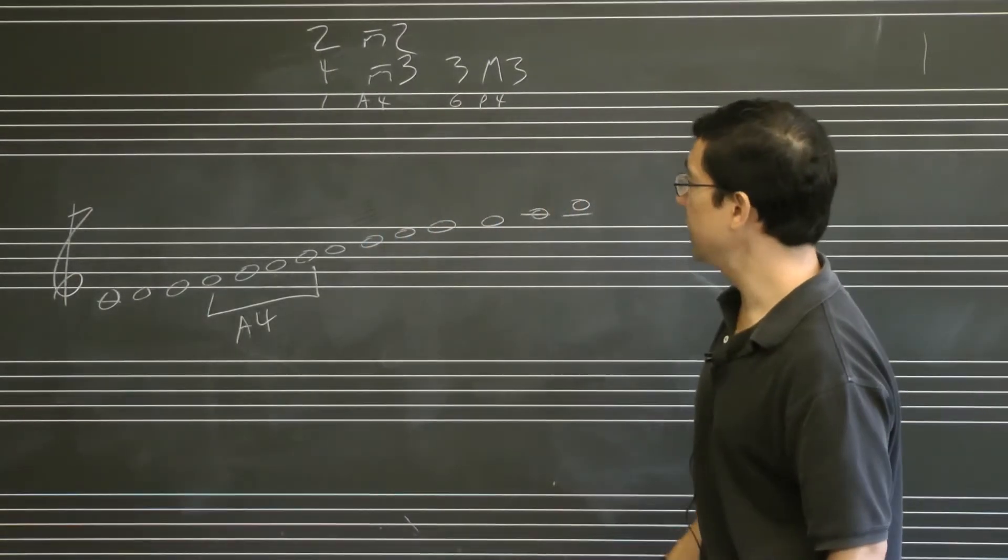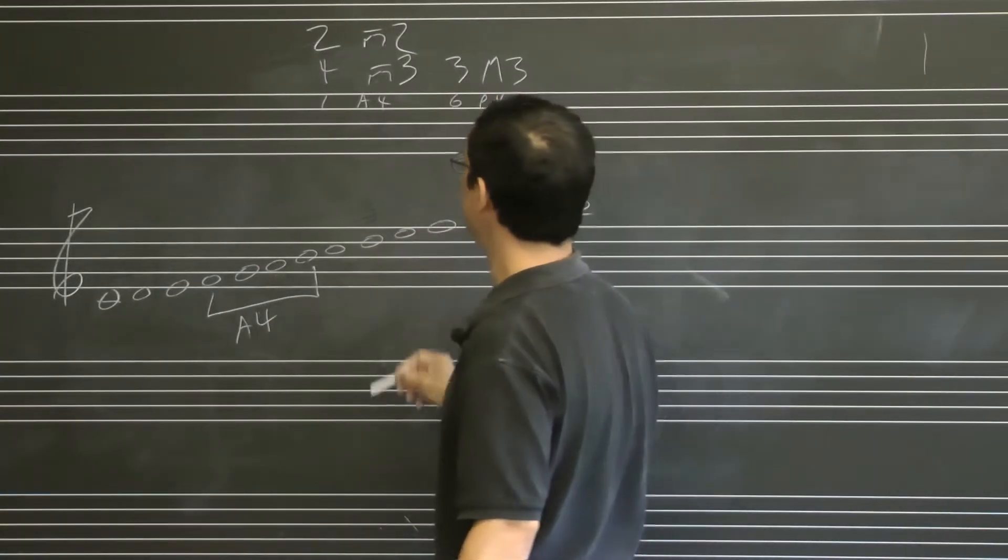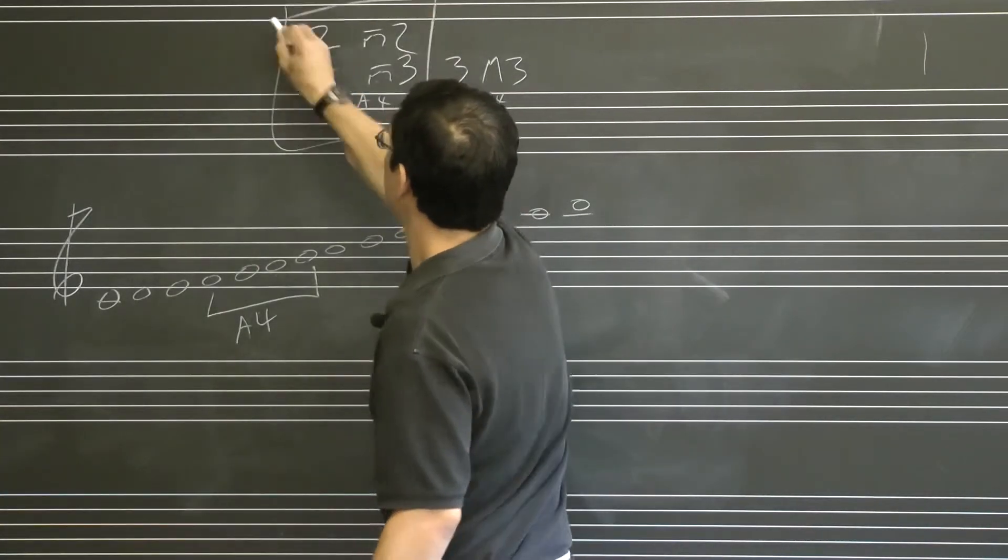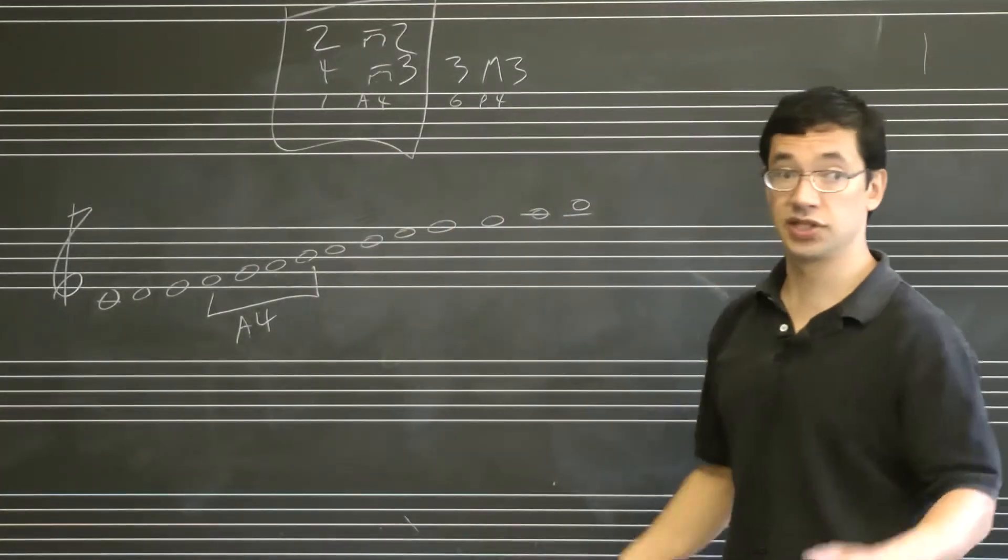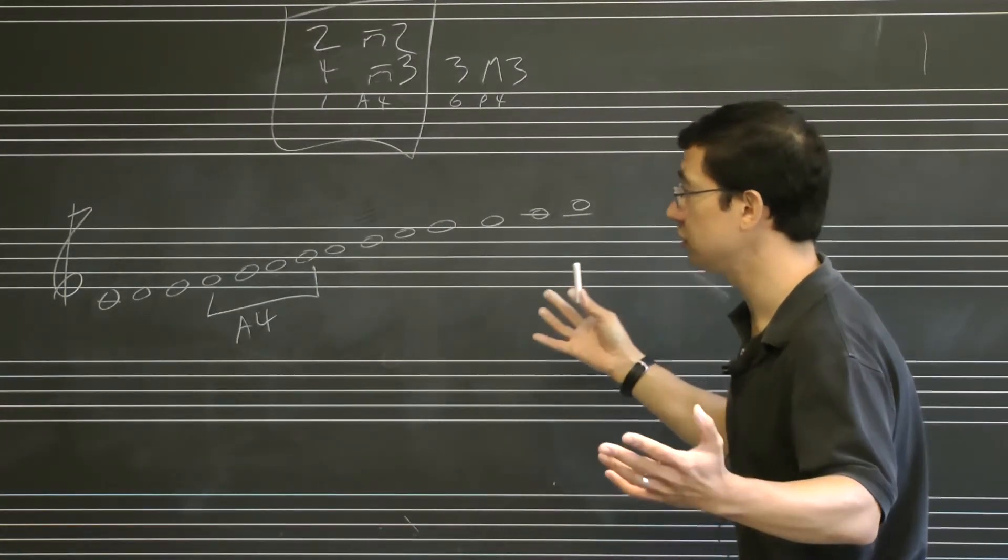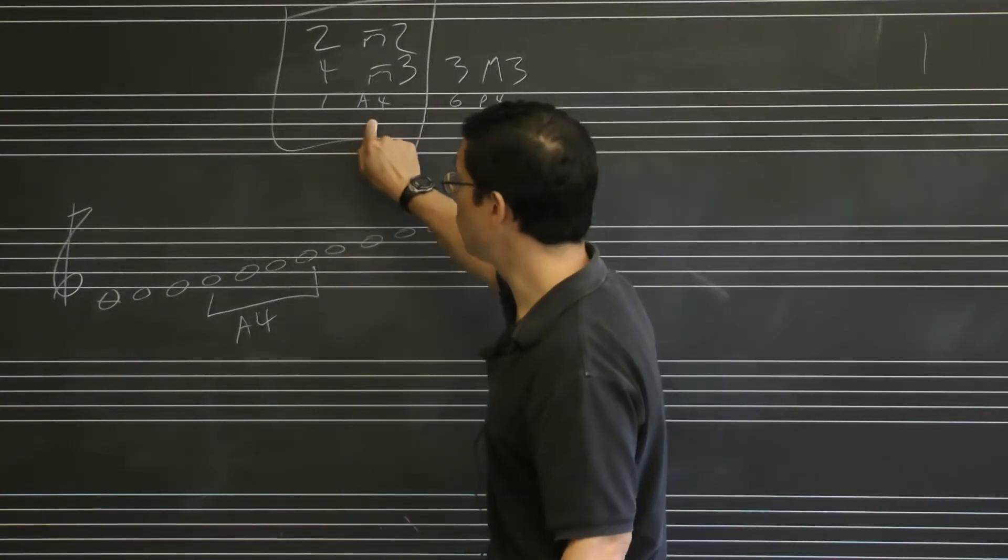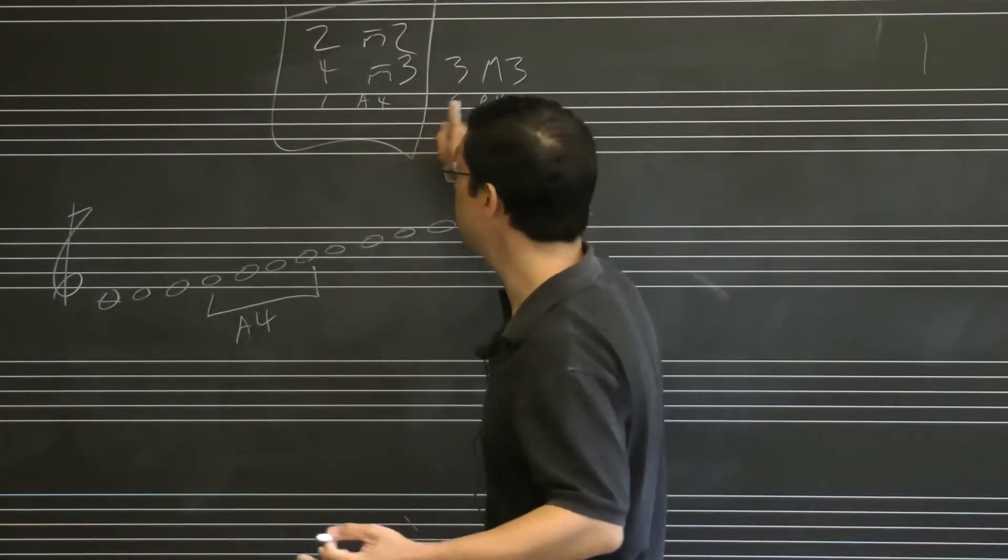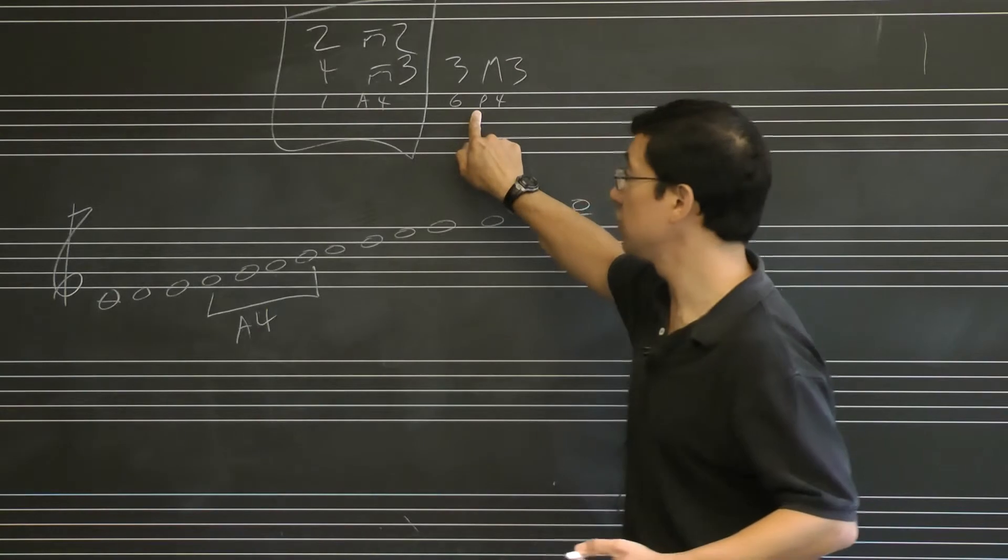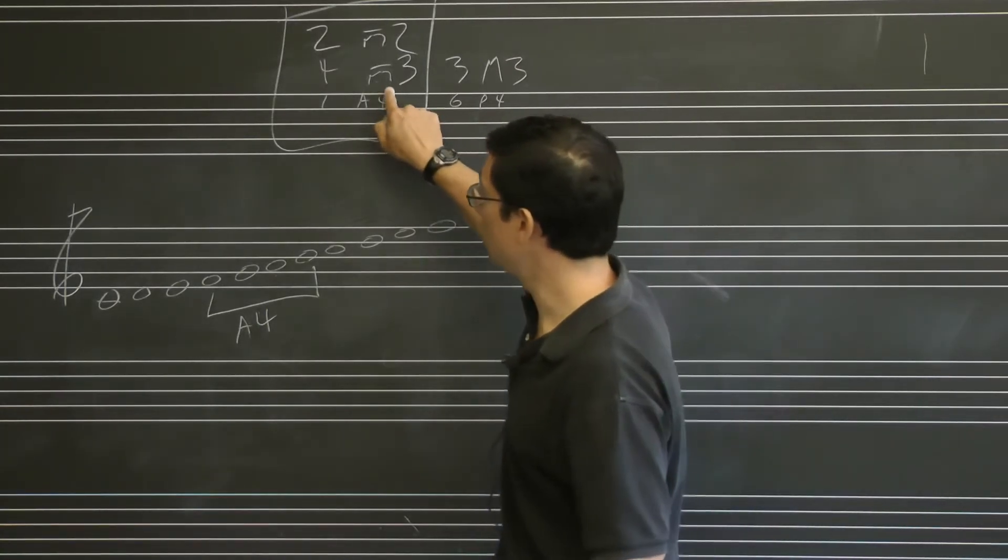Now, the beauty of it is that you can remember either one of these, but just remember those three pieces of information, you've got the whole thing, because now fifths. Well, fifths are just inversions of fourths, right? So if there's one augmented fourth, there's one diminished fourth, and the rest, the other six are perfect.